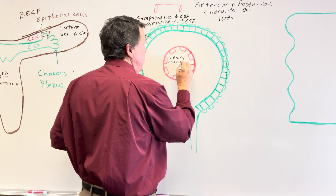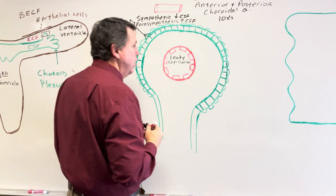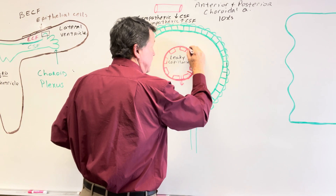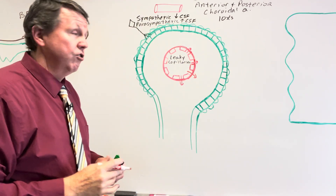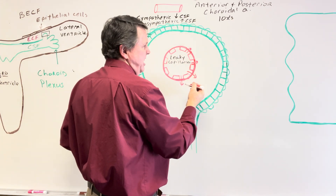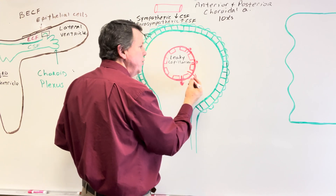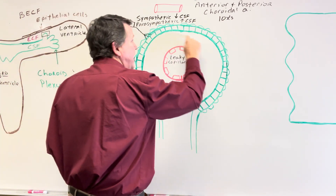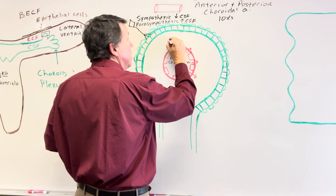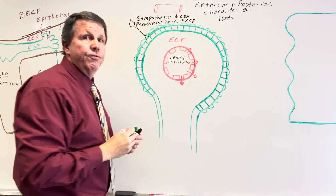There are actually several of these leaky capillaries. What happens is we're going to get fluids and plasma coming out of here, because they're not in the blood-brain barrier — we don't have those tight junctions. In fact, these are called fenestrated capillaries, and we're going to have fluid coming out fairly easily into the area in here, which is the extracellular space containing extracellular fluid.